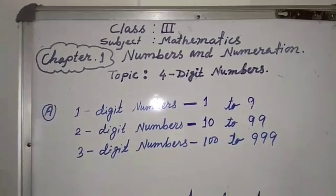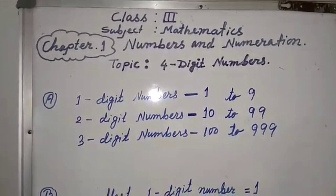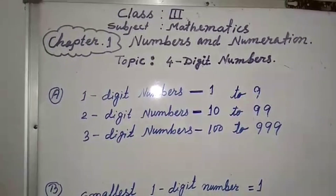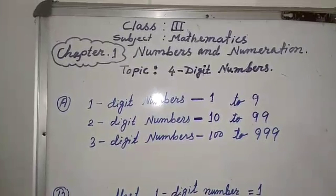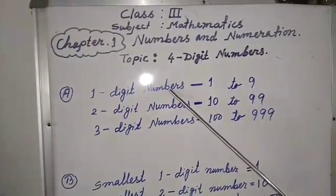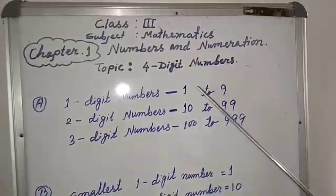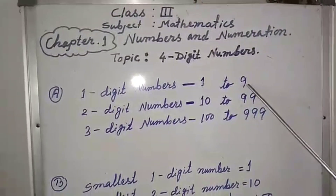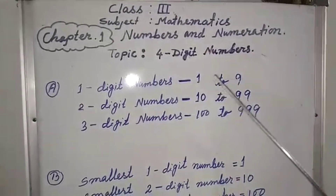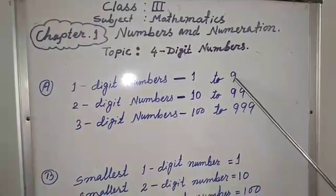In the previous class, we have learned numbers up to 3 digits. We know that 1-digit numbers are from 1 to 9. So 1, 2, 3, 4, 5, 6, 7, 8, 9 — all are 1-digit numbers.